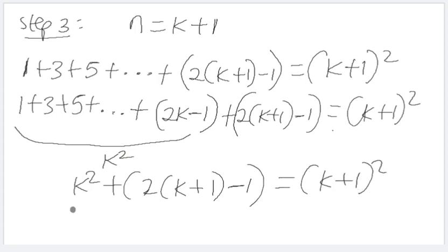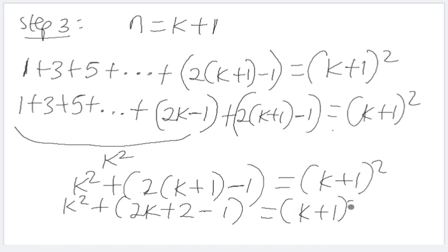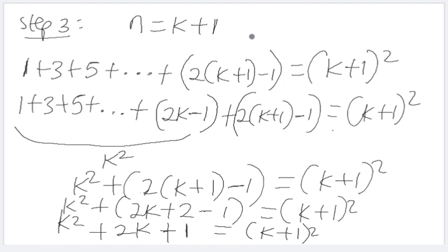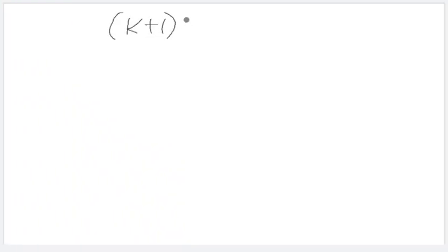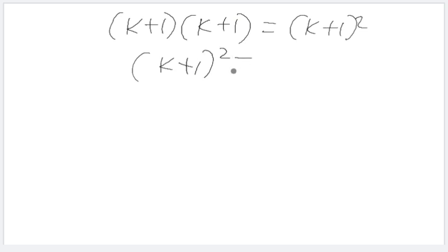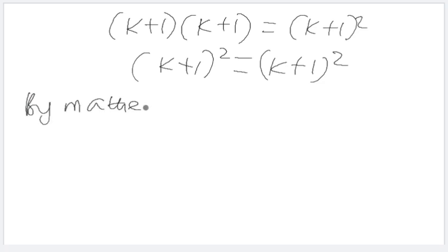So we have k squared plus two times (k plus one) minus one equals (k plus one) squared. Opening the bracket: k squared plus 2k plus 2 minus 1 equals (k plus one) squared, which gives k squared plus 2k plus one equals (k plus one) squared. This factors as (k plus one) squared equals (k plus one) squared. It has satisfied the third condition, so by mathematical induction the statement is true and valid.